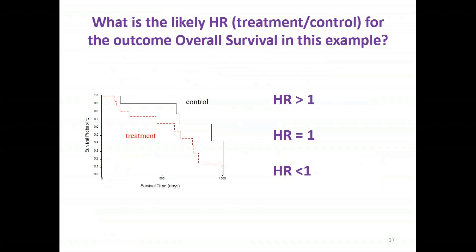On this slide we have a Kaplan-Meier curve comparing the survival probability for a treatment group in red and a control group in black. I'd like you to look at that survival curve and answer: what is the likely hazard ratio comparing treatment to control for the outcome of overall survival — greater than one, equal to one, or less than one? I'll give you a few minutes to answer.